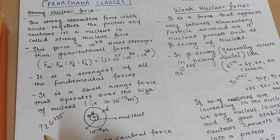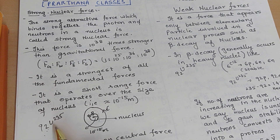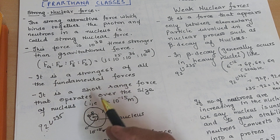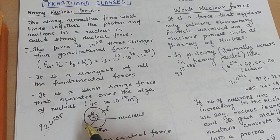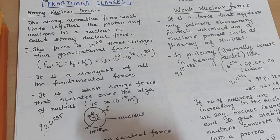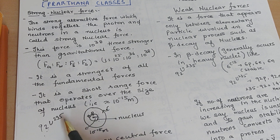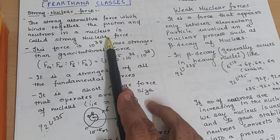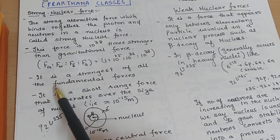In heavy nuclei like Uranium-235, there are around 143 neutrons. Now you know that protons, being positively charged, should repel each other — they should push each other away, and the nucleus should become unstable. But that does not happen; the nucleus remains stable, because there is some strong binding force which exists between proton-proton, neutron-neutron, and proton-neutron, and that binding force we call the strong nuclear force.